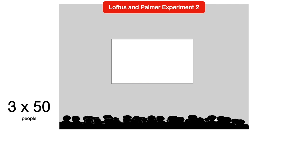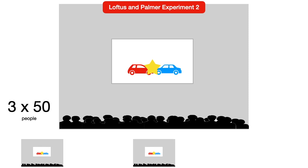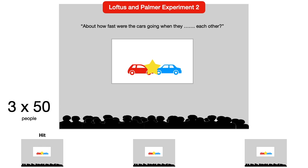In experiment two, Loftus and Palmer gathered 150 new subjects and separated them into three equal groups of 50. Each group was shown the same short film. Afterward, one group was asked how fast the cars were going when they hit each other, another group was asked when they smashed into each other, and the last group — the control group — was not asked any question.